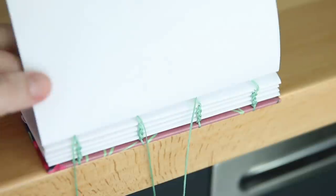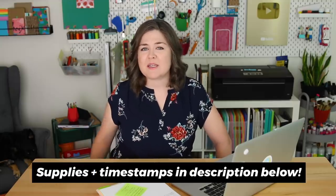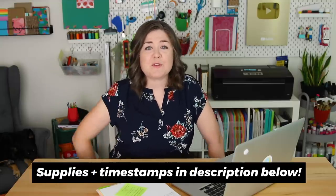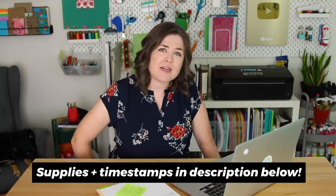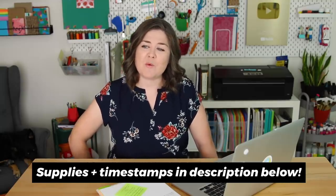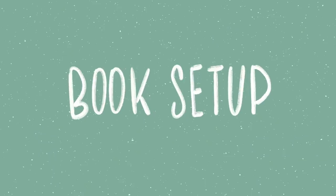Instead of binding across the entire signature, you're stitching in sections of two. You can find links to all of the supplies I use in the description below, and if you want to skip ahead to just the binding portion, I included timestamps down there. Or if you want to watch the cover setup and how I set up all my pages, keep on watching.